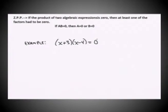Okay, so at the top of the screen here, I just have stated the zero product principle in phrased words. So if the product of two algebraic expressions is zero, then at least one of the factors had to be zero.